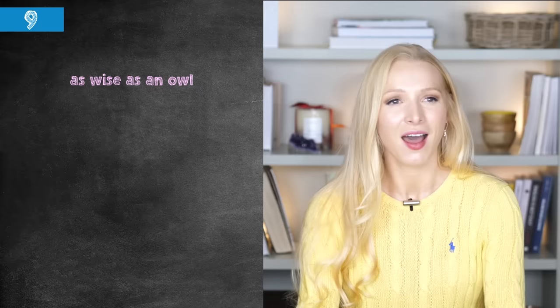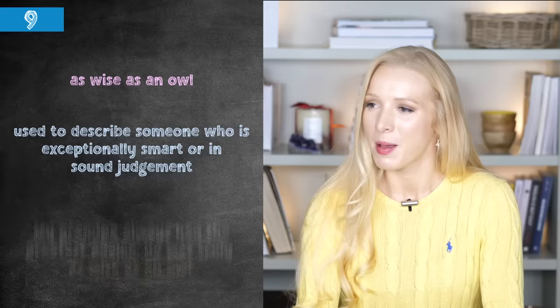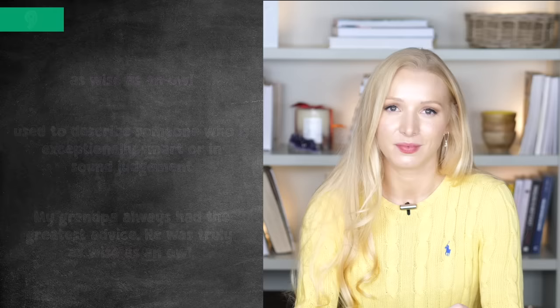Number nine, our last animal simile, is 'as wise as an owl.' In the UK and in America, owls have the reputation of being very wise and intelligent. So if someone is as wise as an owl, it means they are very intellectual, have good judgment, and are very intelligent. An example: my granddad always gave the greatest advice — he truly was as wise as an owl.